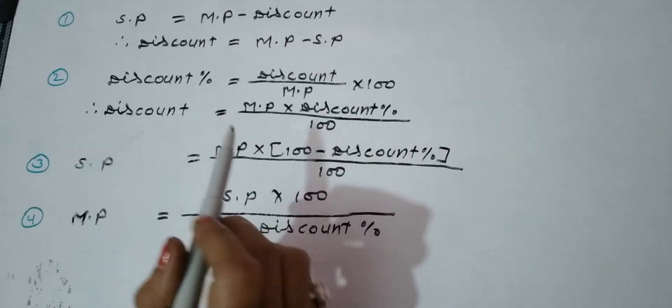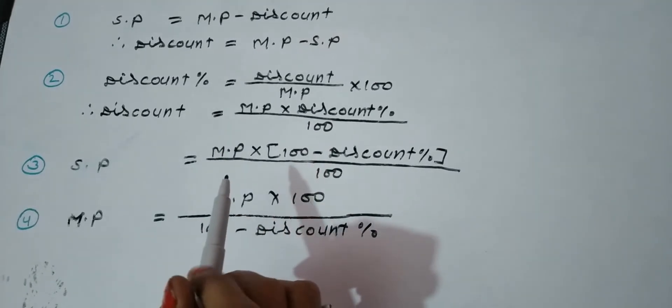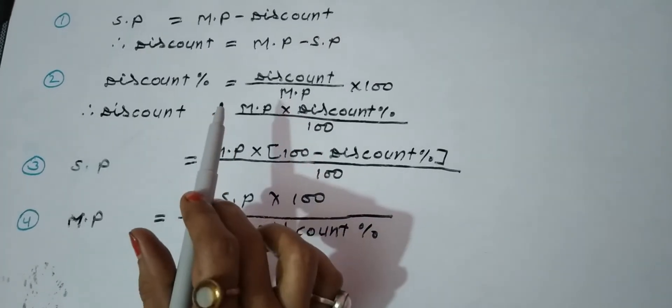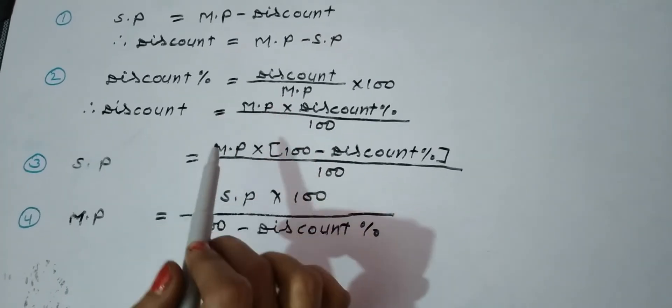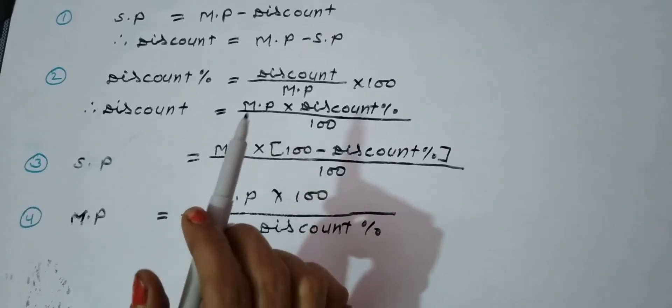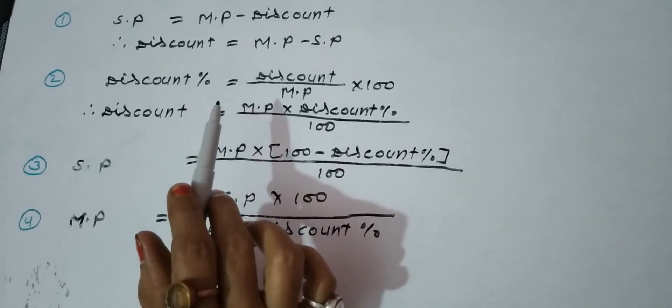Here I have written some formulas. So let's start. In the first formula, we will discuss market price and discount.